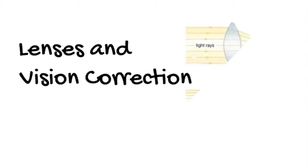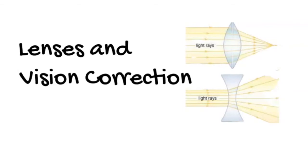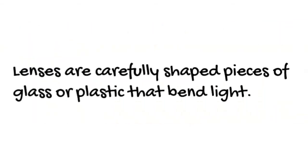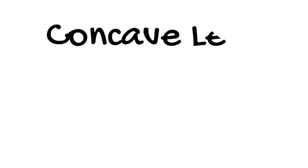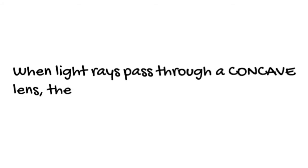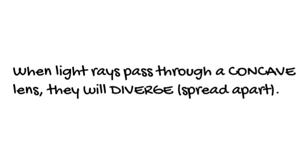This is a short video about lenses and vision correction. Lenses are carefully shaped pieces of glass or plastic that bend light. A simple concave lens looks a little like this — thick on the edges and thin in the middle. When light rays pass through a concave lens, they will diverge or spread apart.